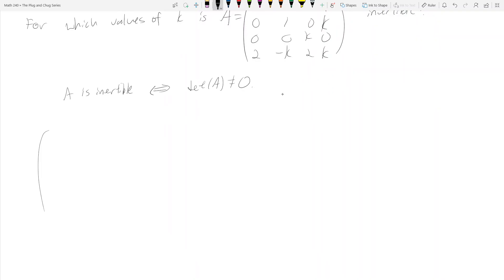So here's A which is [1 0 1 1; 0 1 0 K; 0 0 K 0; 2 -K 2 K]. Remember we want to get this in upper triangular form, so I'm going to take this row and subtract two times this row.